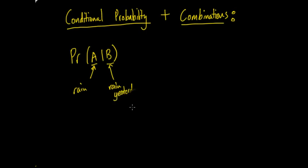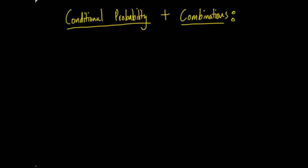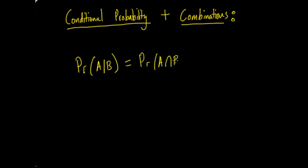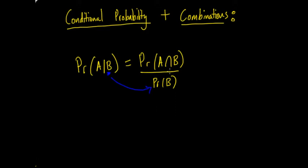The important part of conditional probability is being able to identify that a question actually is a conditional probability question. Here is the formula: the probability of A given B equals the probability of A intersection B over the probability of B. To remember this, the 'given that B' part goes on the bottom as the probability of B, and you have the intersection on the numerator. Copy that formula down to make sure you know it.